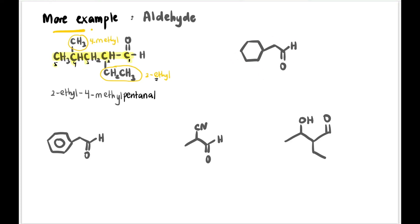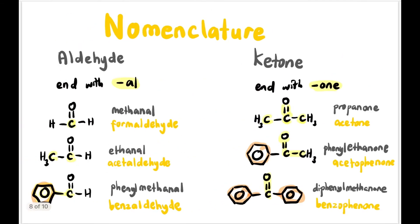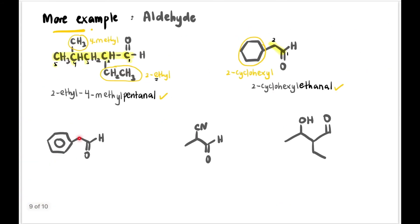Next, this compound's parent chain has one, two carbons — we don't take the cyclic part — so two carbons, and at carbon two the substituent is cyclohexyl. So the full name is 2-cyclohexylethanol.